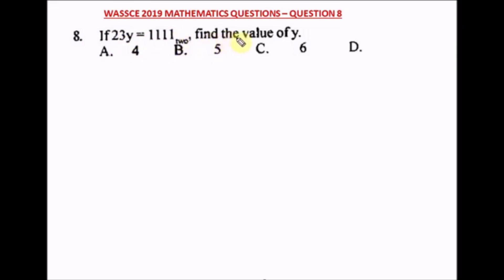Question eight of the WAEC 2019 mathematics past question. If 23_y = 111 in base 2, find the value of y. Convert both sides to base 10. For the left side, powers go from right: position 0, 1, 2. For the right side: positions 0, 1, 2, 3. Converting left: 2·y¹ + 3·y⁰ = 2y + 3.